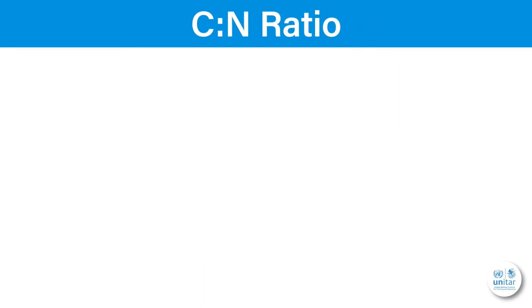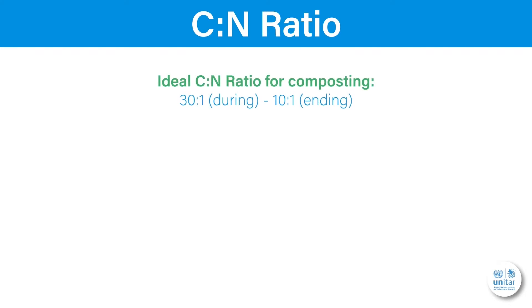Besides water, microorganisms need carbon and nitrogen to survive. For each unit of nitrogen they ideally need around 30 units of carbon. This is what we call the CN ratio, which for composting is ideally around 30 to 1. As carbon gets converted to CO2, the CN ratio decreases.